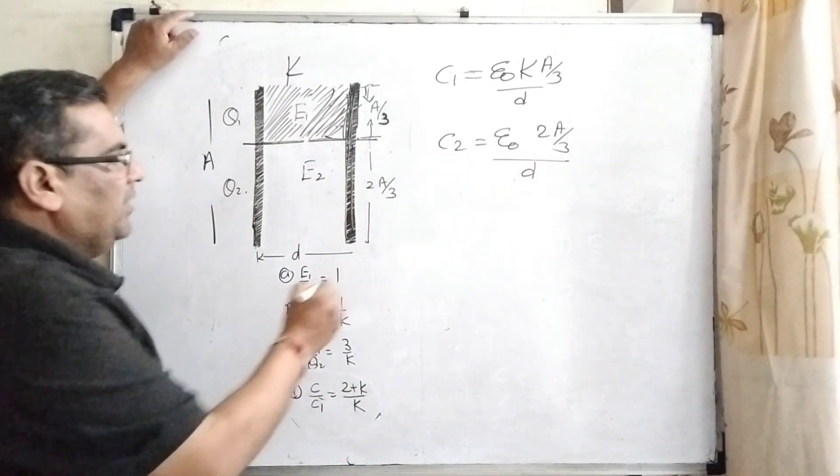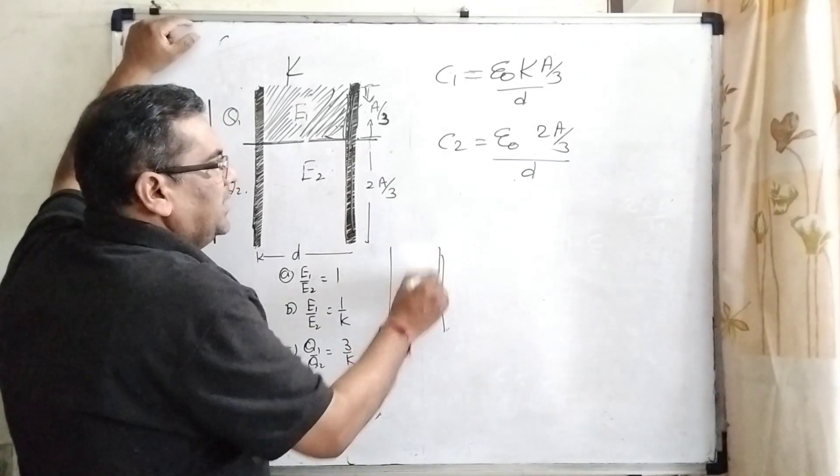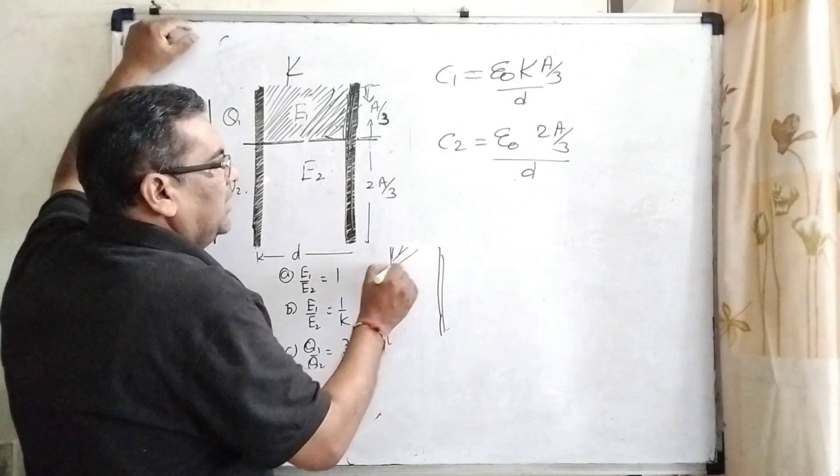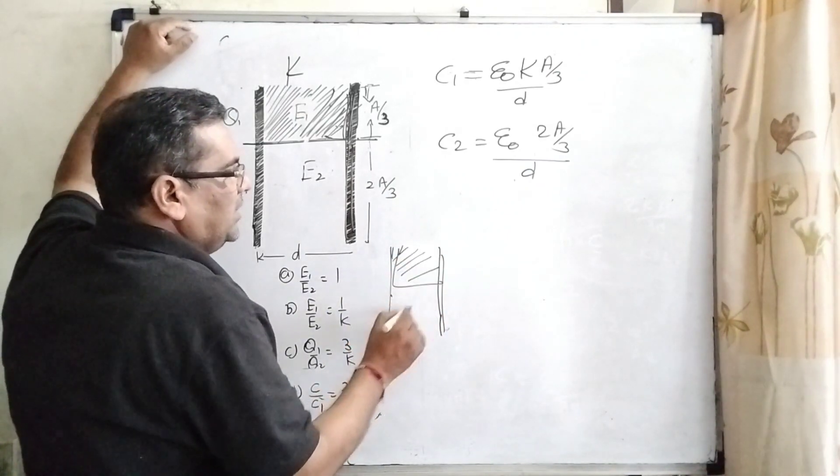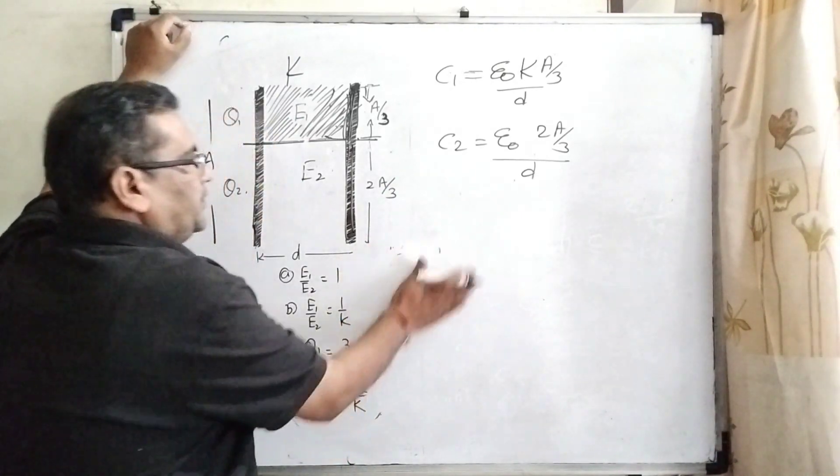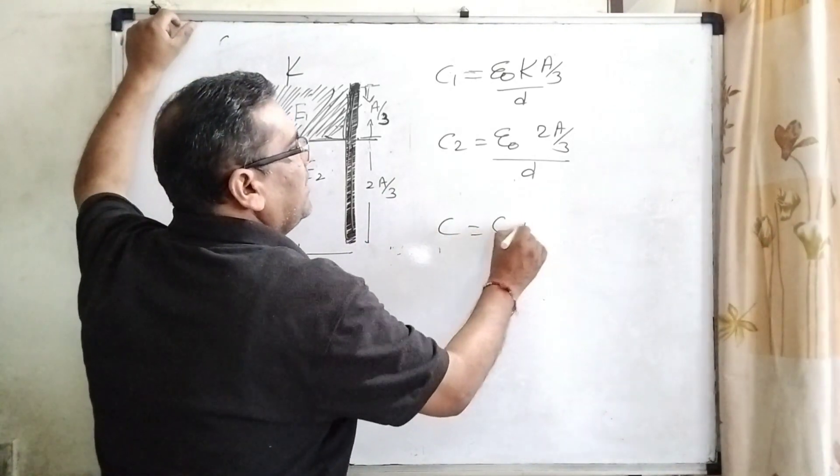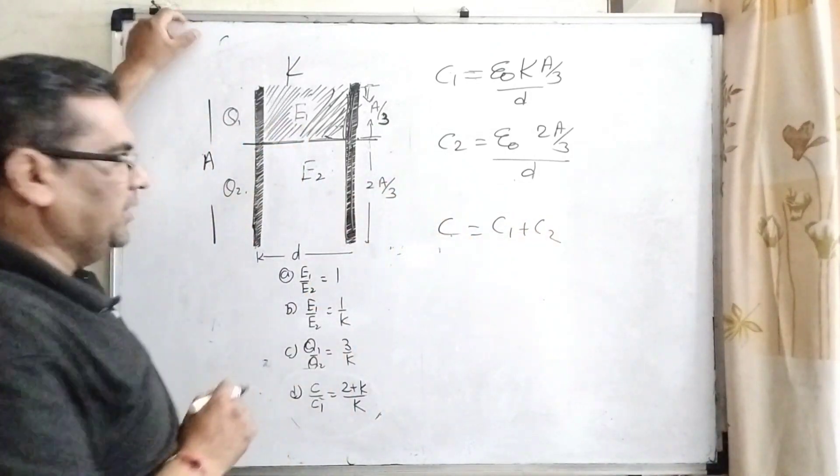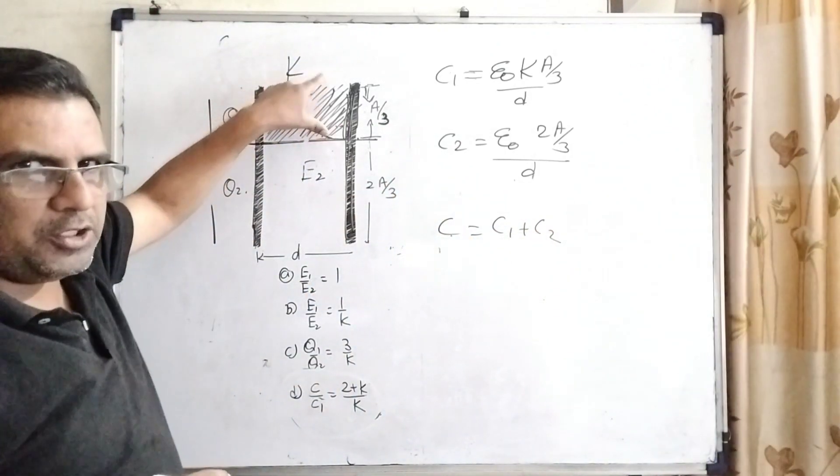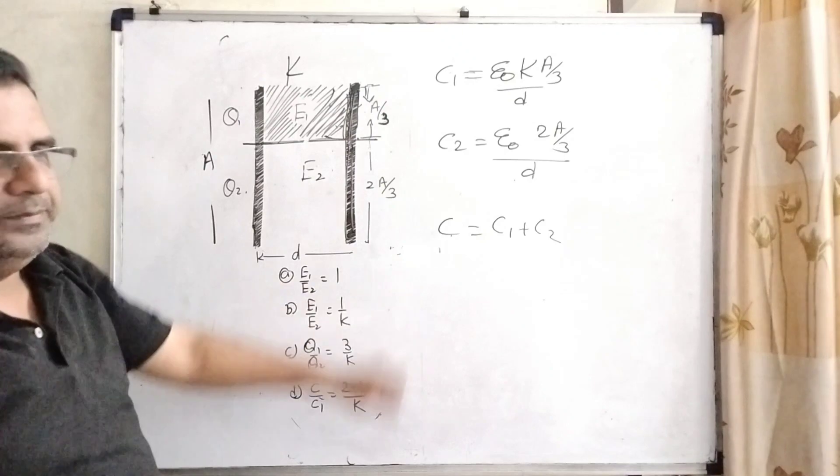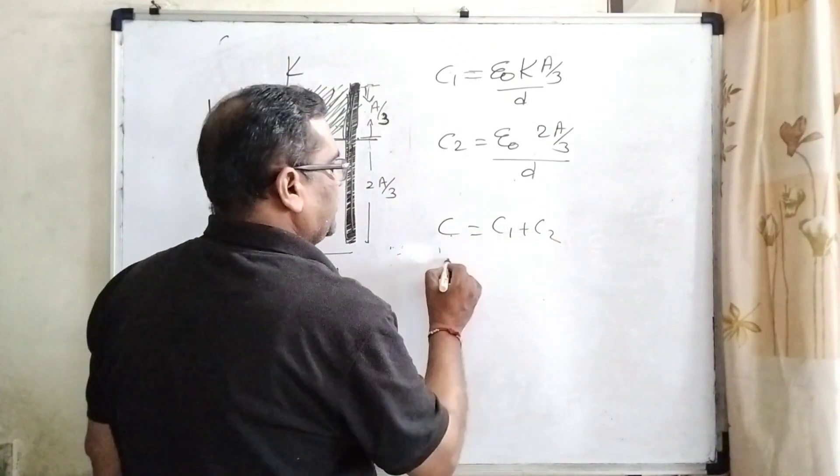You know that very well. When dielectric medium is kept in this way, it works as parallel capacitors. So C equal to C1 plus C2. Here given in the question, the sum or total net capacitance is C. So C equal to C1 plus C2.